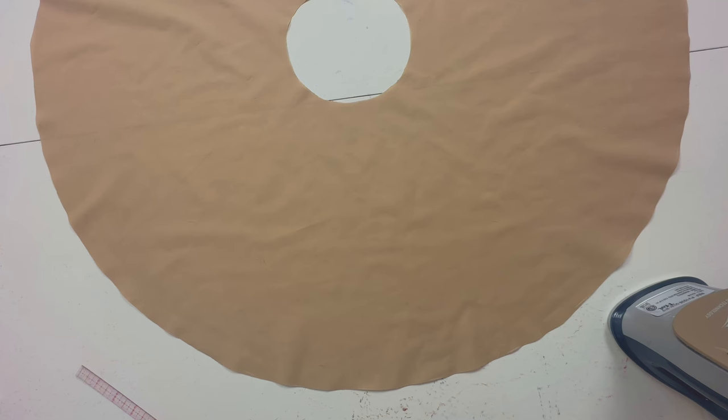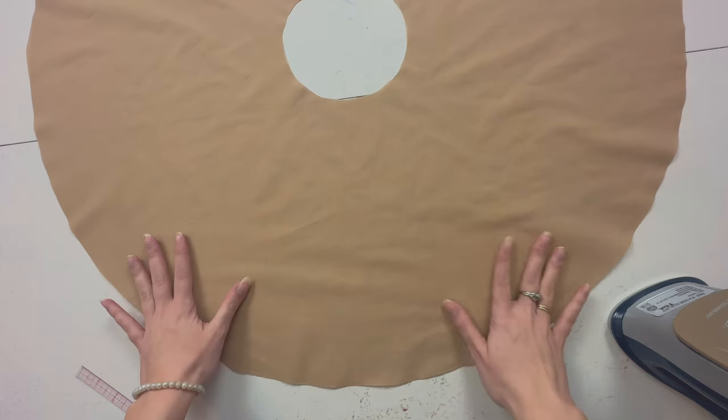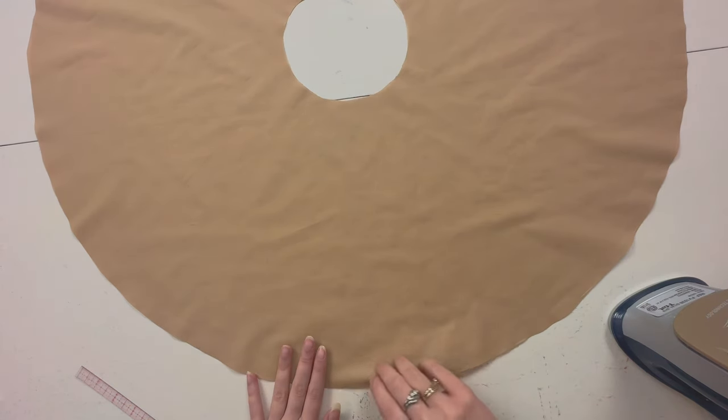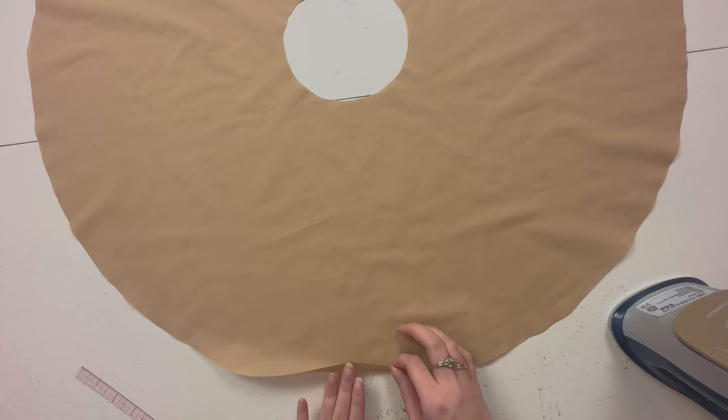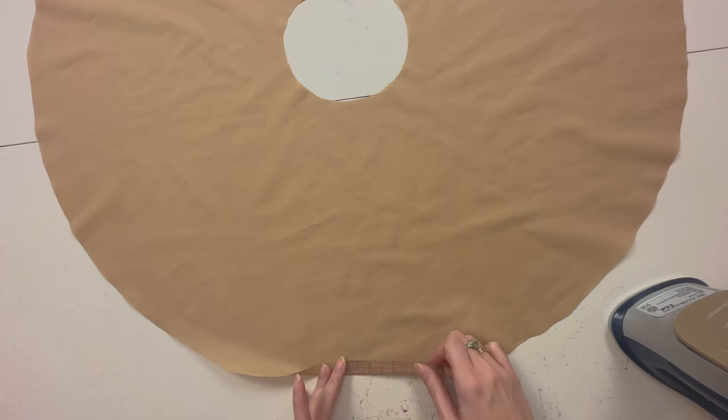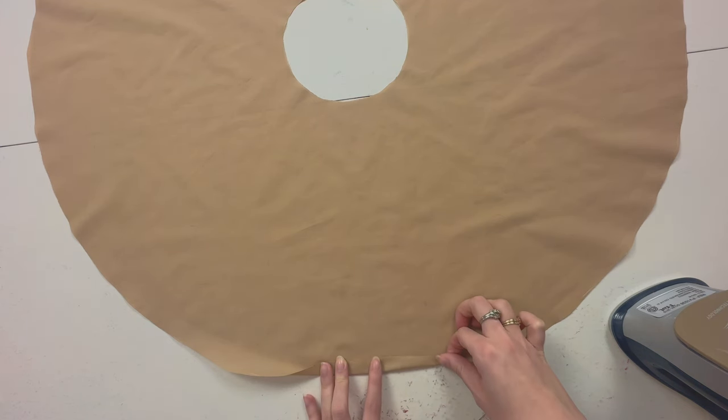Alright, so first things first, sorry about my dad, he's making a little bit of noise. What you're gonna do is take the edge of your fabric and fold it about half an inch. That's pretty good and you're gonna want to fold that half an inch all around.